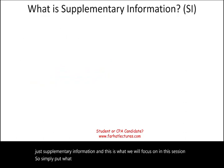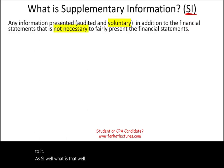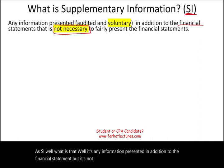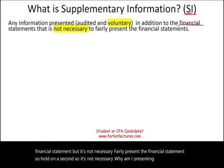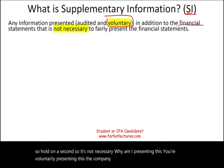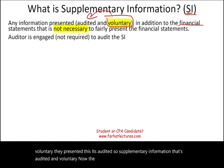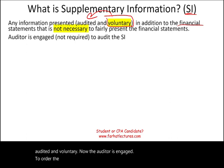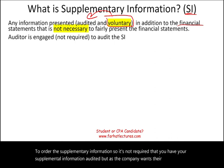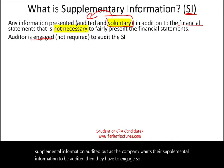Simply put, what is supplementary information — I'll refer to it as SI. It's any information presented in addition to the financial statements, but it's not necessary to fairly present those statements. The company voluntarily presents this, and it's also audited. The auditor is engaged to audit the supplementary information, so it's not required that you have it audited, but if the company wants it audited they have to engage the auditor — it's basically a different engagement.